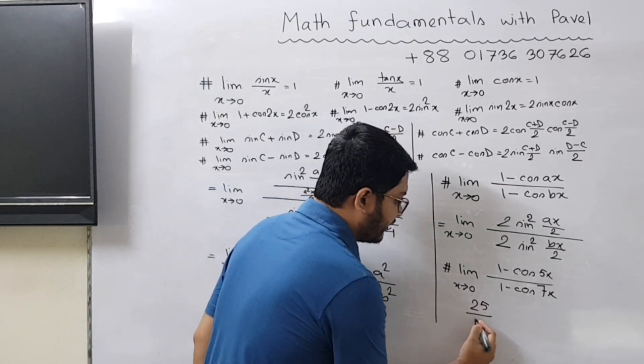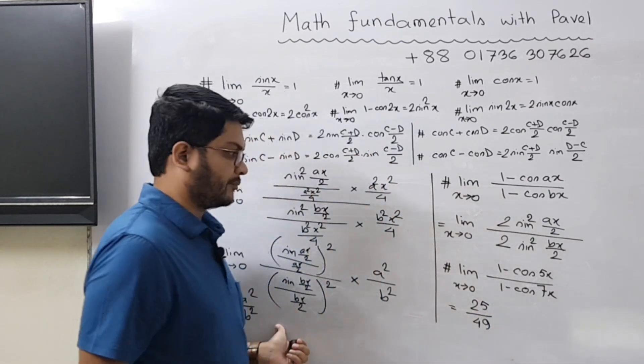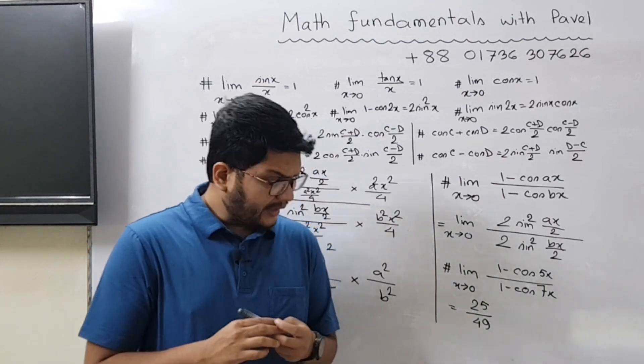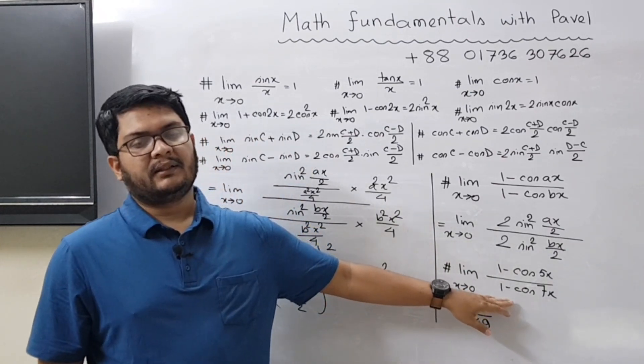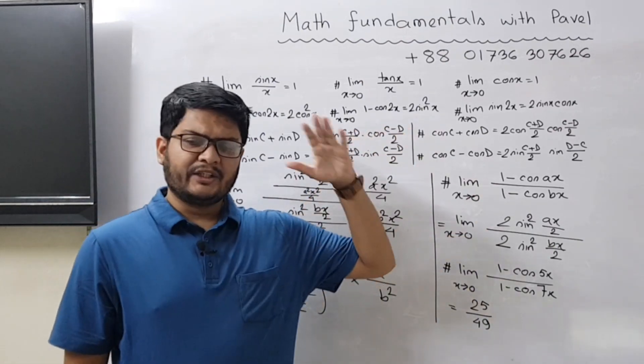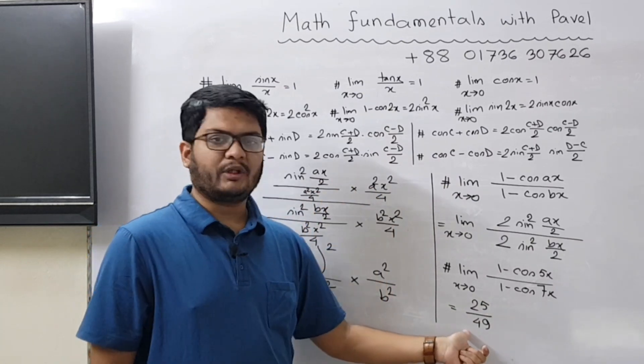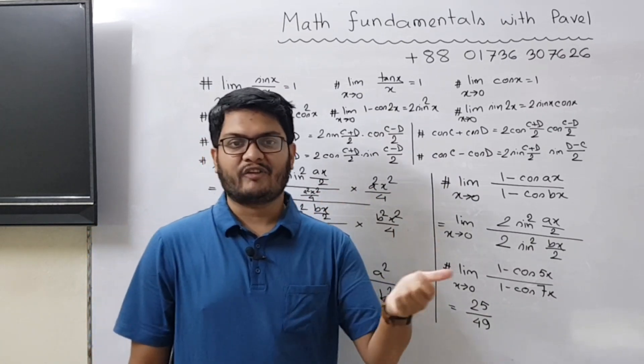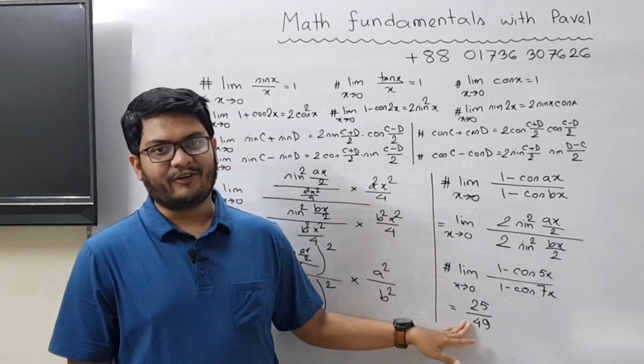You can also do another thing. You can change this part using the formula of 1 - cos 2x and using all those steps. If you follow all the steps finally you will get 25/49. If you do not believe me you can just verify that and let me know in the comment section whether this is the answer or not.